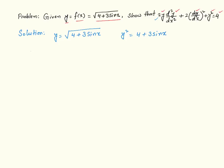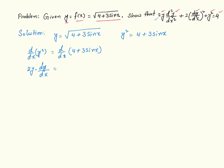Now I am going to take the derivative of both sides with respect to x. On the left hand side, using implicit differentiation, the derivative of y square is 2y times dy over dx. On the right hand side, using the addition property, the derivative of 4 is 0, and the derivative of 3 sine of x is 3 times cosine of x.